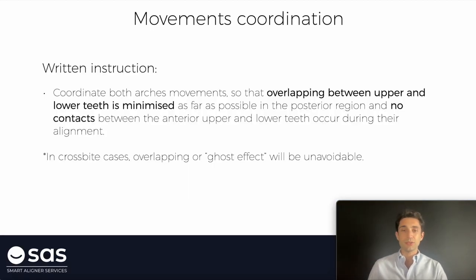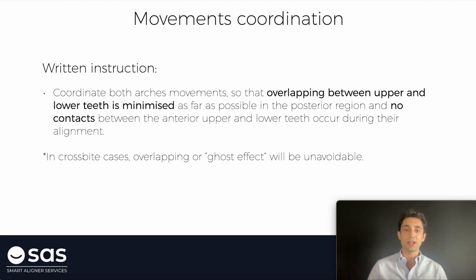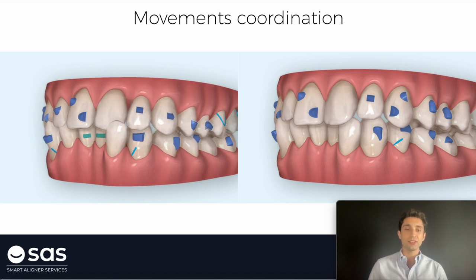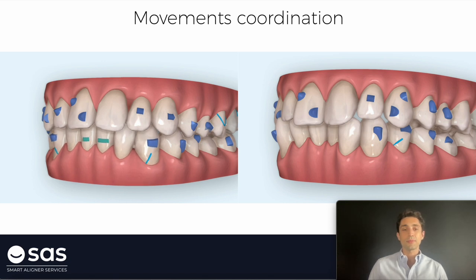Movements coordination. This instruction is related with the previous one. If we do not have the same number of active aligners in both arches and we have to solve sagittal problems, it's going to be very difficult for the technician to coordinate upper and lower movements. The written instruction is: please coordinate both arches movements so that overlapping between upper and lower teeth is minimized as far as possible in the posterior region, and no contacts between the anterior upper and lower teeth occur during their alignment. In cross bite cases, of course, it's impossible to avoid this ghost effect or this overlapping between upper and lower teeth.